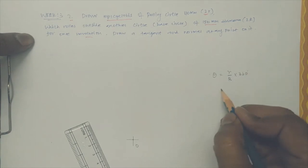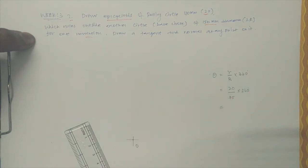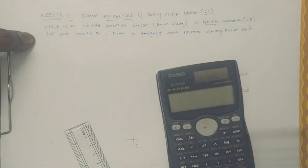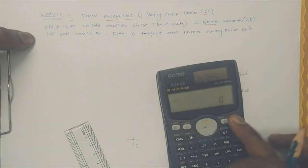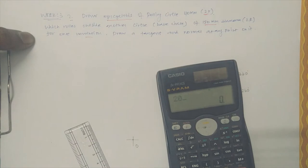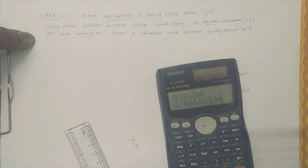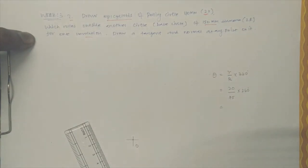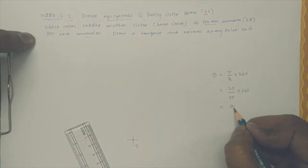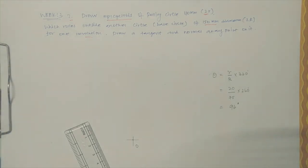Theta equals small r divided by capital R multiplying by 360. Here, 20 is rolling circle radius, 75 is base circle radius, multiplying by 360 will give you the included angle of base circle. 20 by 75 into 360, so obviously it is 96, so the angle which you need to get before doing the problem is 96.